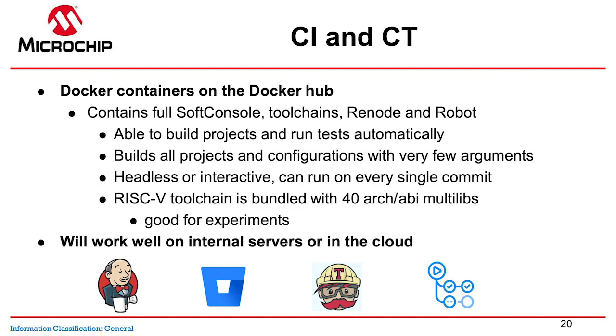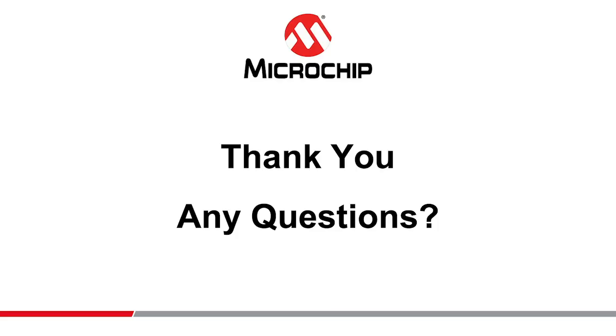Continuous integration and testing is a very significant part of the process, and we at Microchip believe users should have a choice, so we're providing Docker containers with SoftConsole. It bundles the full SoftConsole, both ARM and RISC-V toolchains, Renode, and Robot Framework — very handy for testing. It can build all permutations of all projects and configurations in one go, doesn't require long command lines, and can be run in headless or interactive mode. The bundled RISC-V toolchain has exactly 40 architecture and ABI combinations, and considering NewLib and NewLib-C, it's actually 80 — very handy for experimentation. It will work on local Jenkins instances or cloud platforms such as Bitbucket Pipelines, Travis CI, GitHub Actions, and many more.